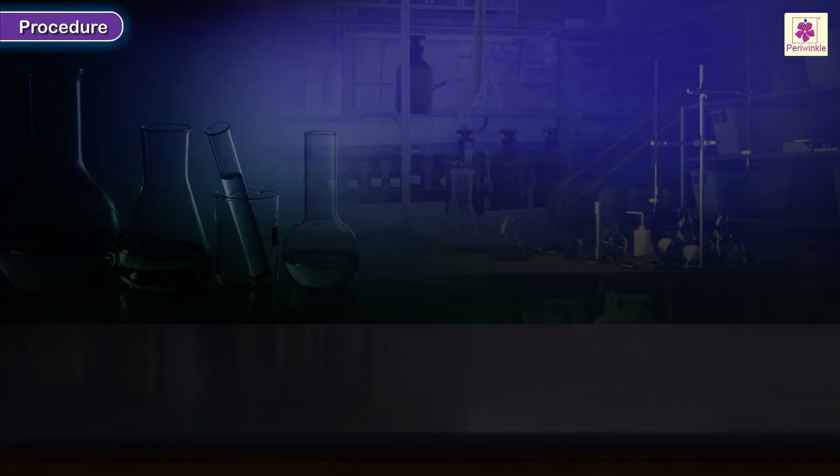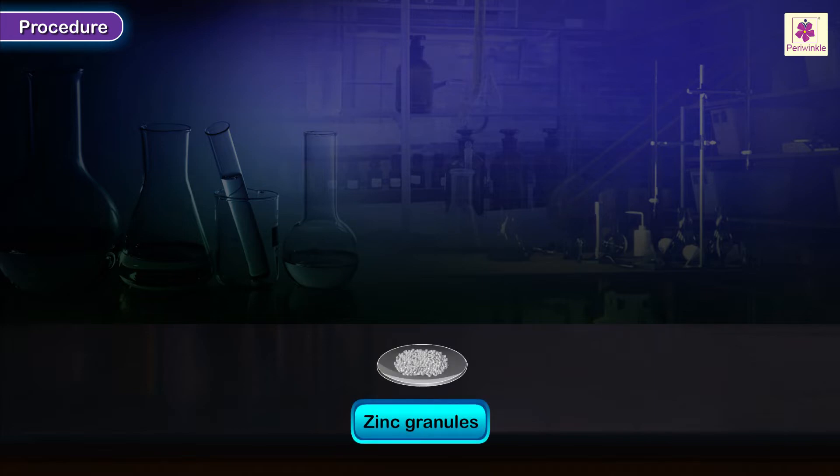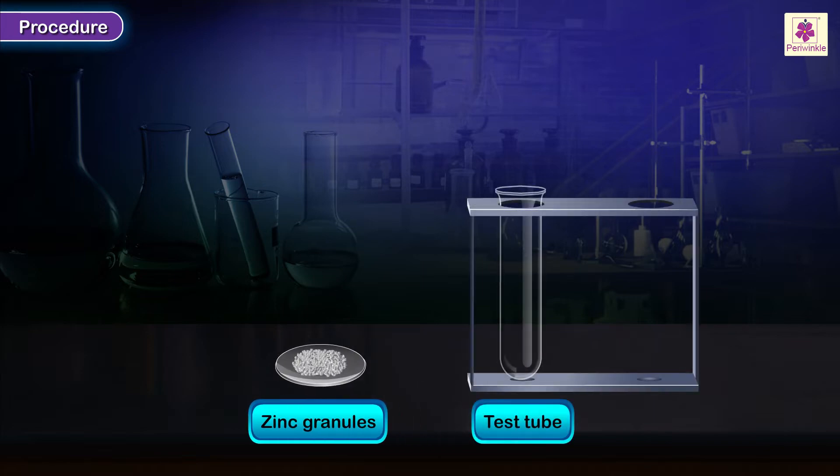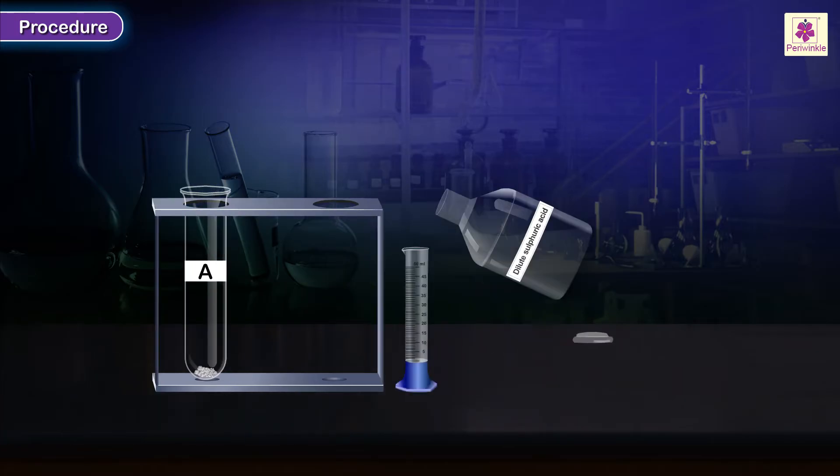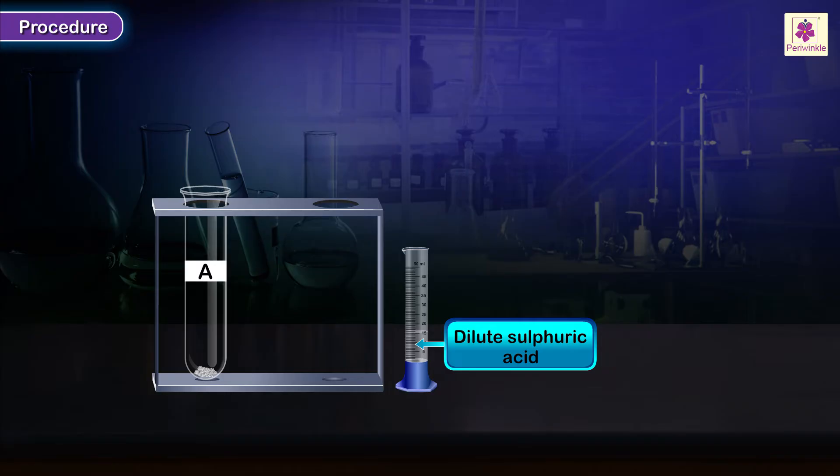Procedure: Thoroughly wash the given zinc granules and take a few of them in a hard glass test tube labeled A. Carefully add about 10 to 15 ml of dilute sulfuric acid to it.